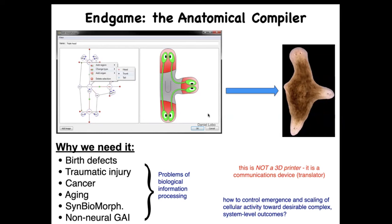There are two really important pieces to this. One is that this is not a 3D printer — the point is not to micromanage the position of every cell. It is also not anything to do with genomic editing or CRISPR. This is fundamentally best thought of as a communications device — AI that translates our anatomical and functional goals to the goals of a collective intelligence of cells that are going to build this thing. We don't have anything remotely like that yet, but I wanted to lay out the opportunity.